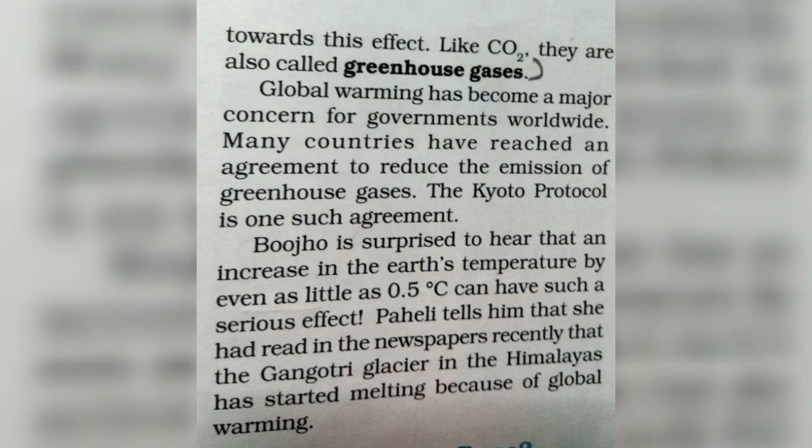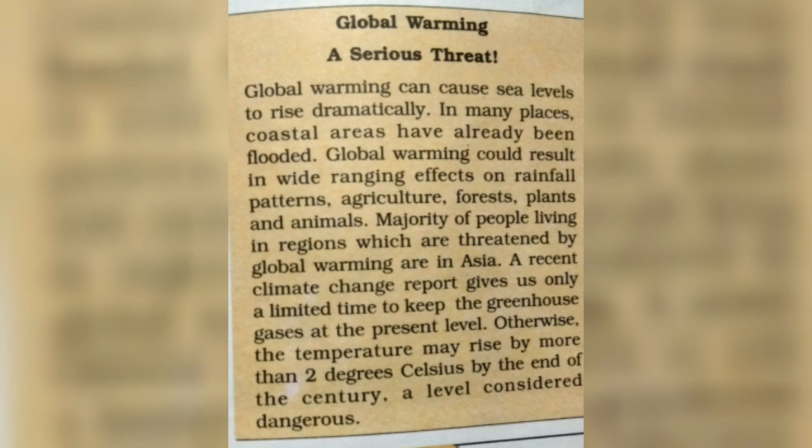Global warming is a very serious and concerning problem nowadays, and we need to focus on how we can reduce it. Global warming can cause sea levels to rise drastically — in many places, coastal areas have already been flooded. Global warming can also result in wide-ranging effects on rainfall patterns, agriculture, forests, plants, and animals.